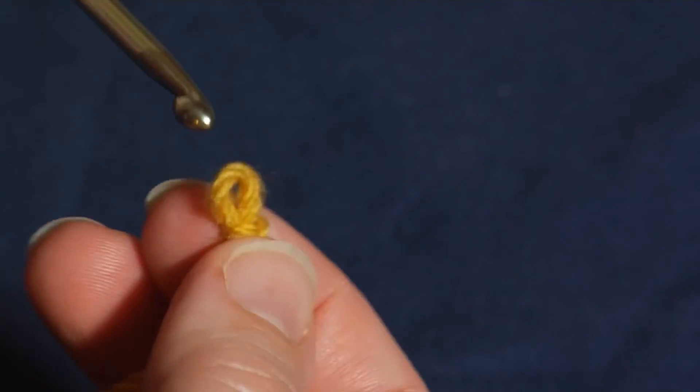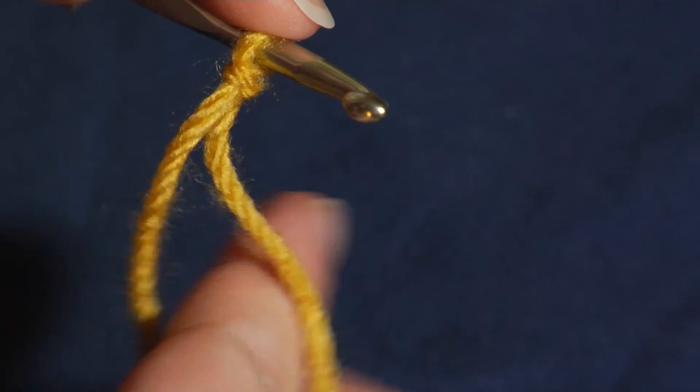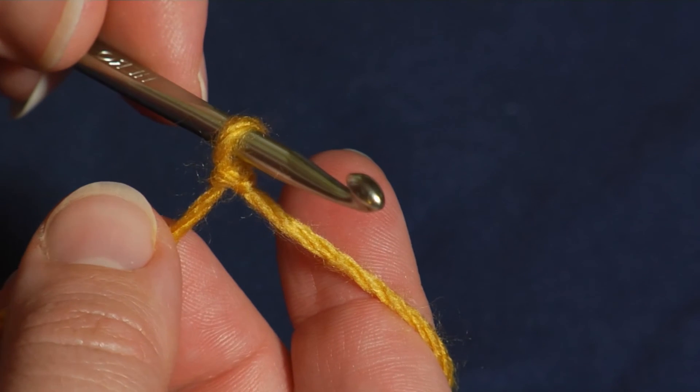Then I can pull my hook out, put it in from the other direction, and I've got the working end in front, the skein end behind, and I'm ready to start crocheting.